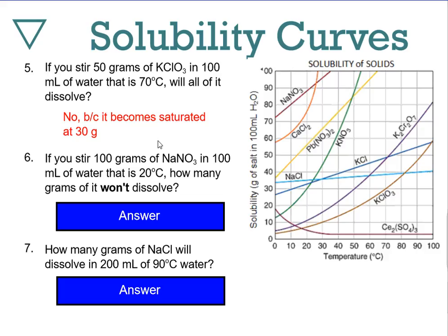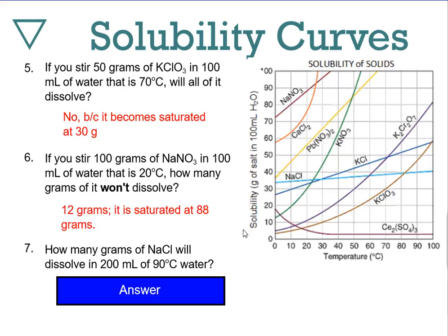We'll look at supersaturation in class. If you stir 100 grams of sodium nitrate in 100 mL of water at 20°C, how many grams will not dissolve? Sodium nitrate — the dark red curve — at 20°C, we would expect about 88 grams to dissolve, a little less than 90. So if you put 100 grams in, about 12 grams would not dissolve.